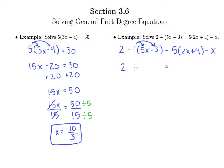Negative 1 times 5x is negative 5x, so I'll write minus 5x. Then negative 1 times negative 3 is positive 3, so I'll write plus 3.